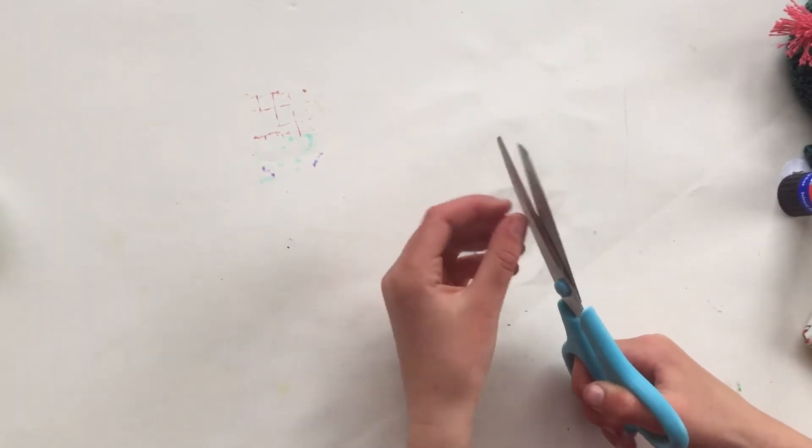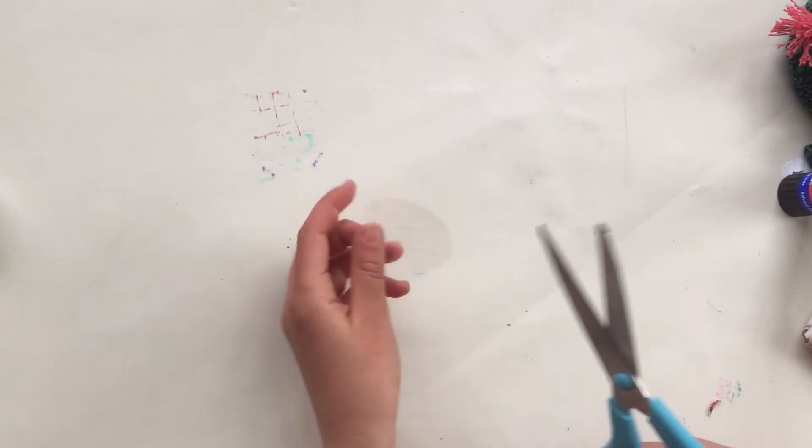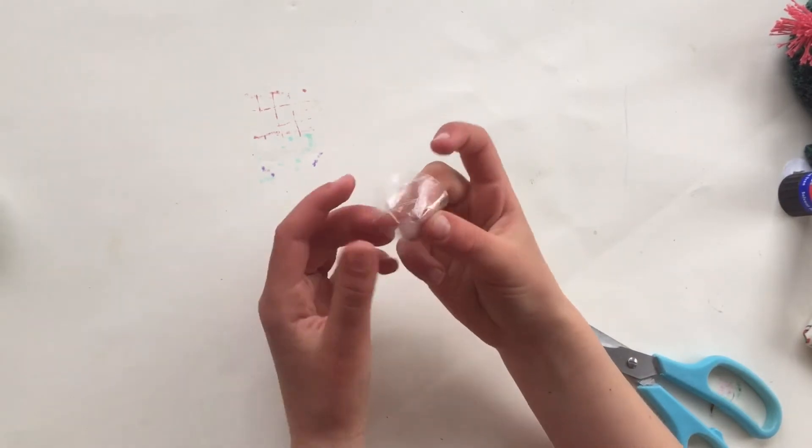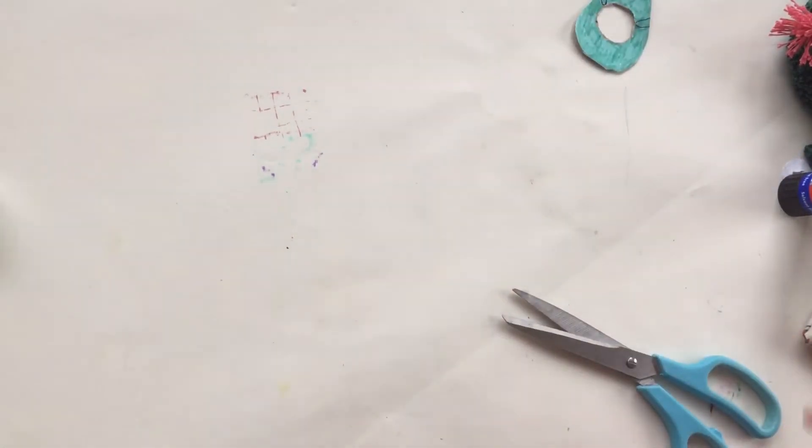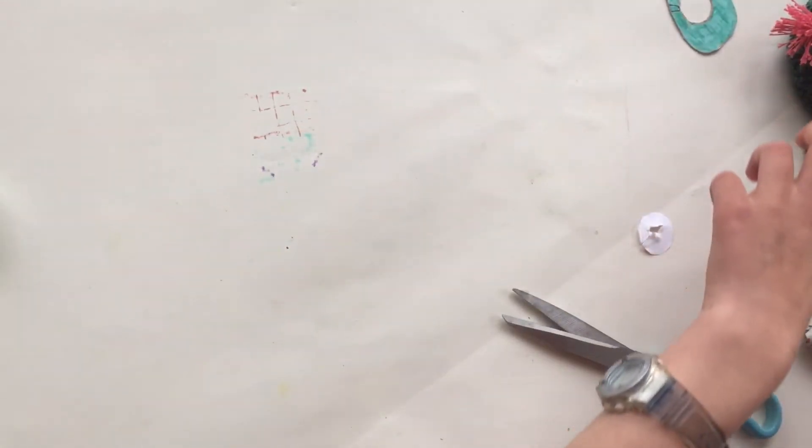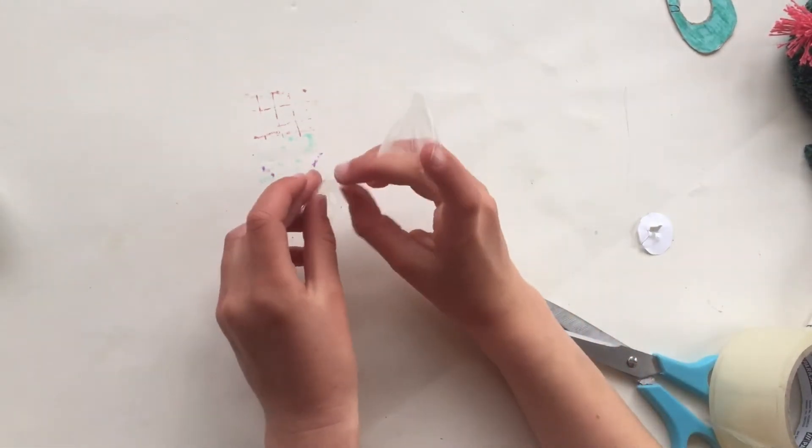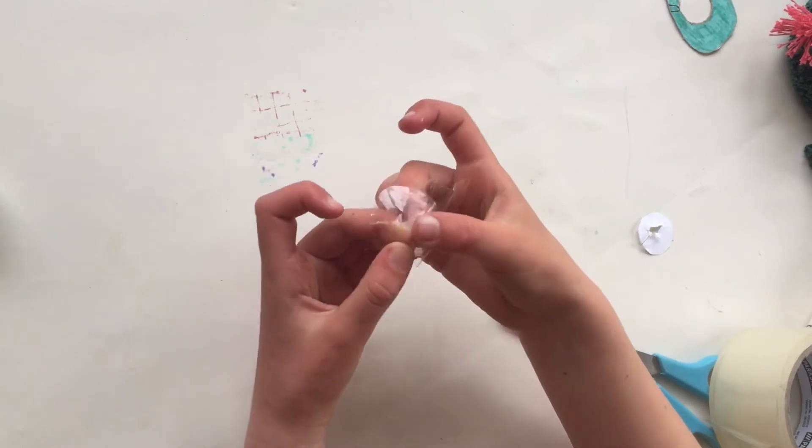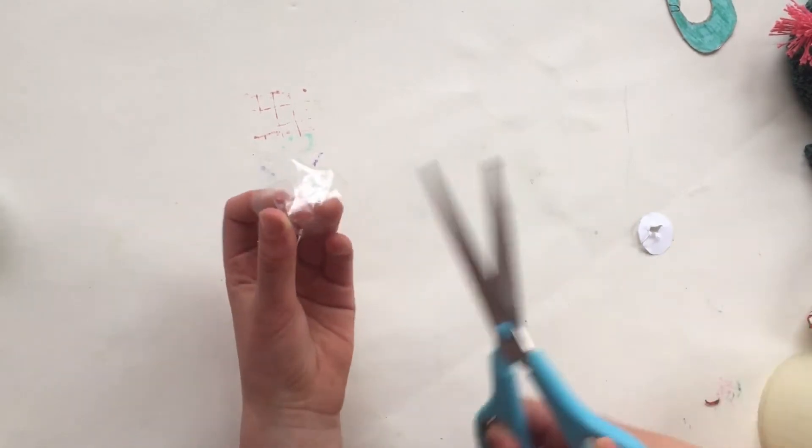Now you need to cut a slit in it and then fold it like a cone shape. Secure that with some tape and make sure the tape fits into the simple dimple bit. I just have to glue this bit back down because it flapped back up.